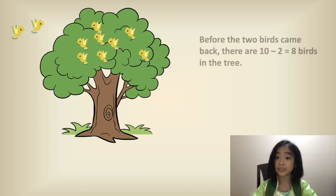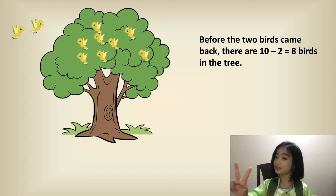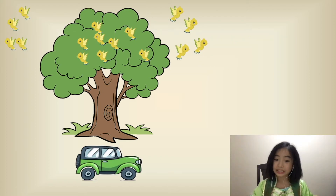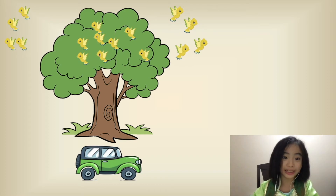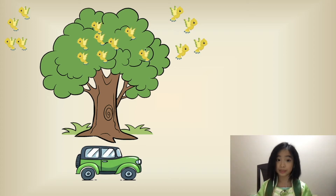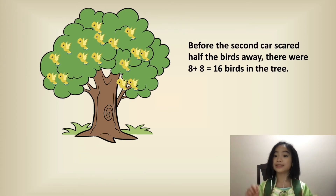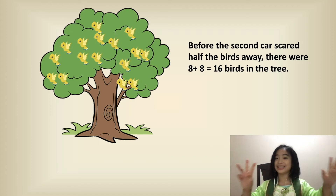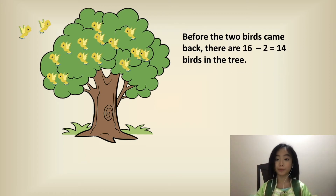This is what it looked like before the two birds came back. So before the two birds came back, there are ten minus two equals eight birds in the tree. This is what it looked like when the second car drove by — it scared half the birds away. So there are eight birds in the tree, and eight birds flew away. So before the second car scared half the birds away, there were eight plus eight equals sixteen birds in the tree.